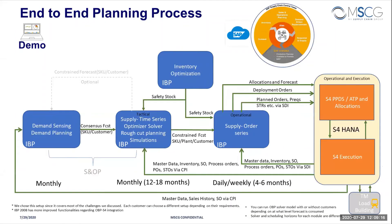One last slide before the demo. SAP IBP has different modules used for planning and S/4HANA is used for execution. We are going to use the Demand module, the Response and Supply module, the Inventory module, and S/4HANA. We picked this particular setup because it addresses most of the challenges we've discussed. Each customer can have different requirements, so they can pick and choose modules — SAP is very flexible in how you can do planning.